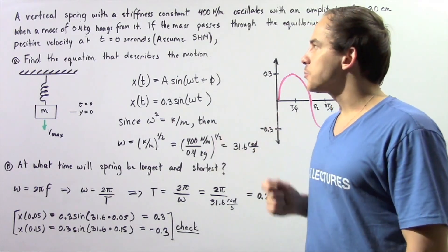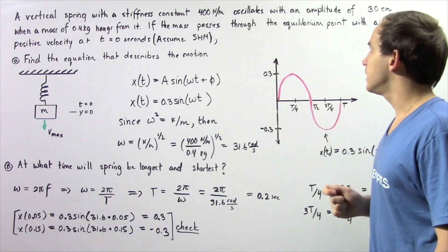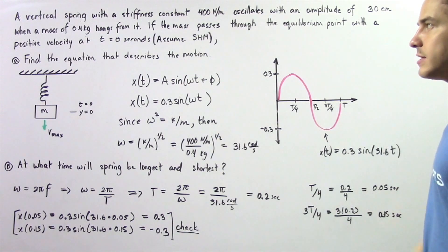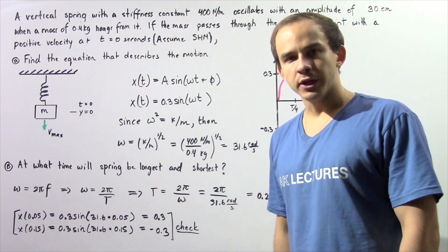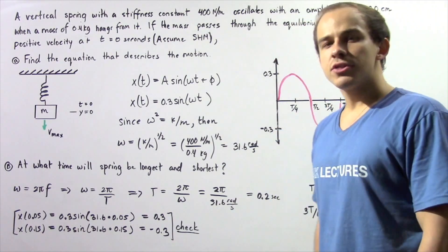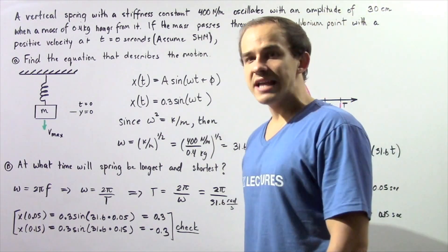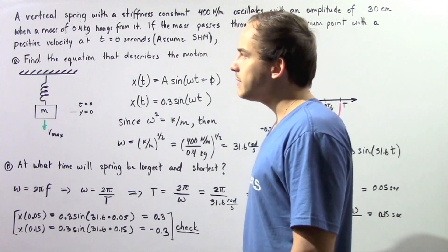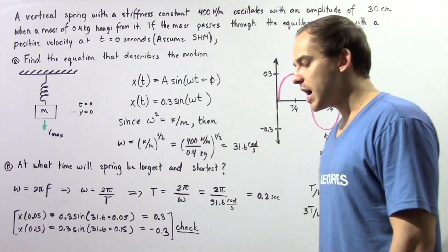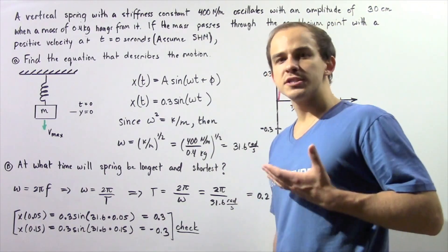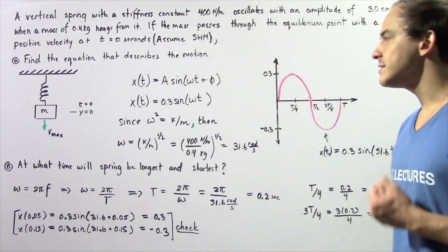Let's suppose that a vertical spring with a stiffness constant of 400 newtons per meter oscillates with an amplitude of 30 centimeters when a mass of 0.4 kilograms hangs from that spring. If the mass passes through the equilibrium point with a positive velocity at time equals 0 seconds, let's find in part A the equation that describes the position of the object with respect to time, and in part B, at what time would the spring be longest and shortest?